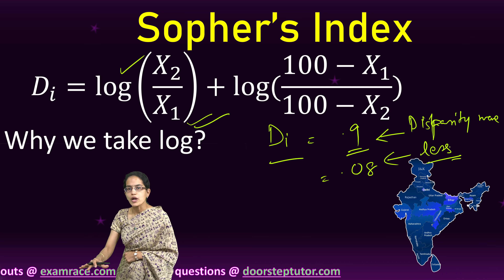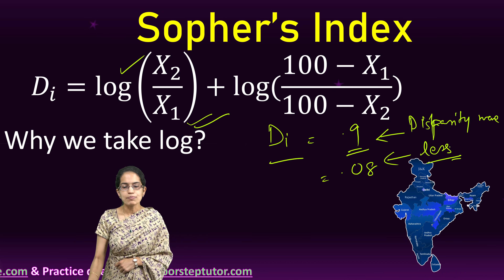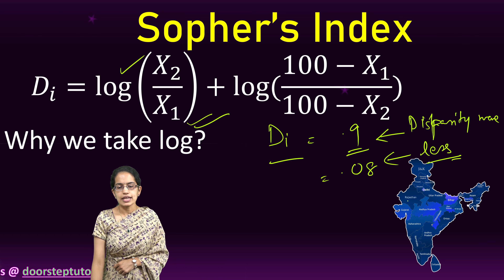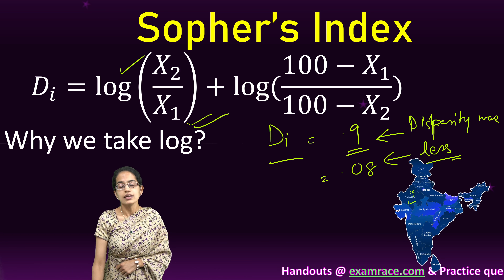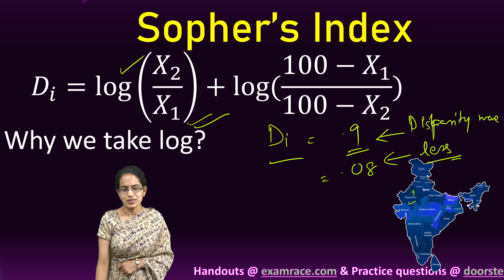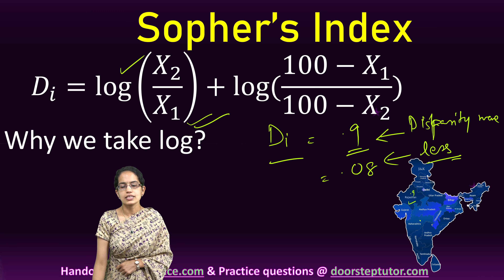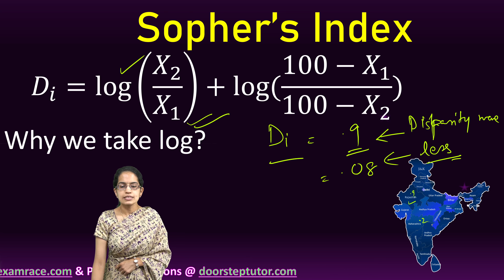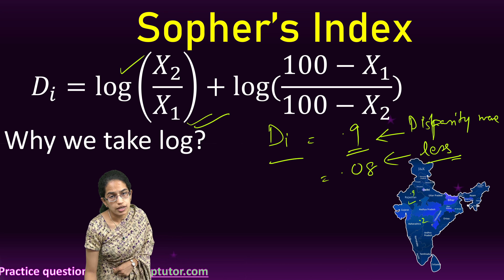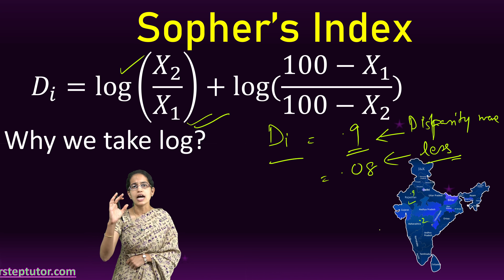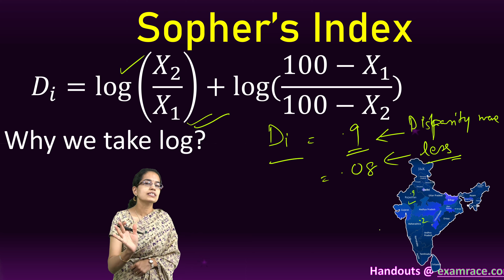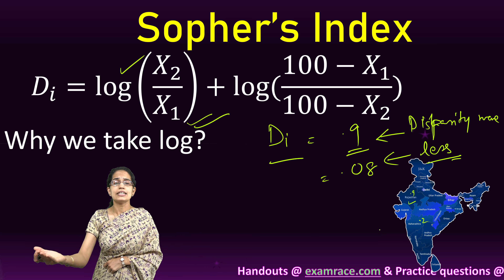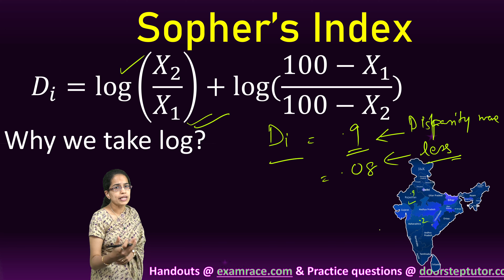The same index can be plotted on a map of India. I draw the various states — let's say the disparity between male and female literacy in Rajasthan is 0.9, and in Maharashtra it is 0.2 (just rough estimates). I shade Rajasthan with a darker shade and Maharashtra with a lighter shade, showing that a darker shade indicates higher disparity and a lighter shade indicates lesser disparity. That is a way of visually presenting the values obtained through Sofer's index.